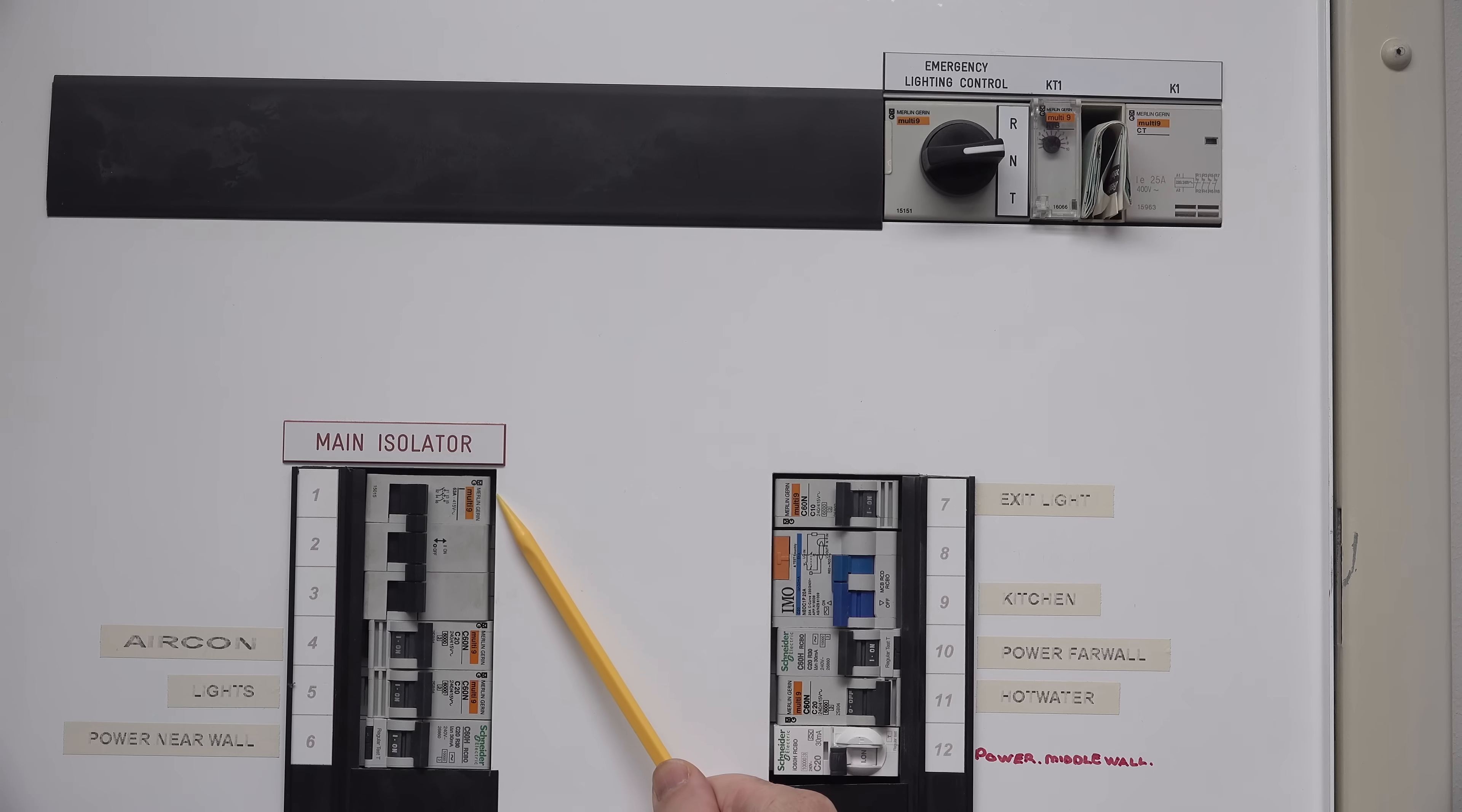Anyway, we've got the main isolator here. These are a Merlin brand. I haven't seen a Merlin in residential, but I don't know, maybe leave it in the comments down below. How do you rate Merlin? So I've obviously got three phases coming in here because there's three phases here. And then we've got an aircon breaker. We've got a light breaker. Neither of those are RCD, have an earth leakage or a residual current device in them.